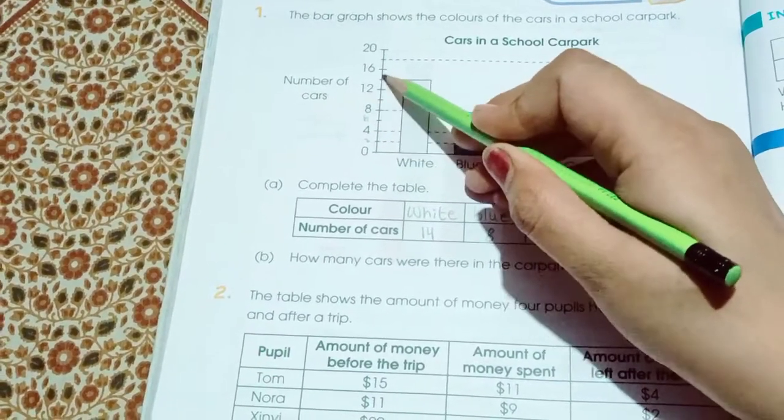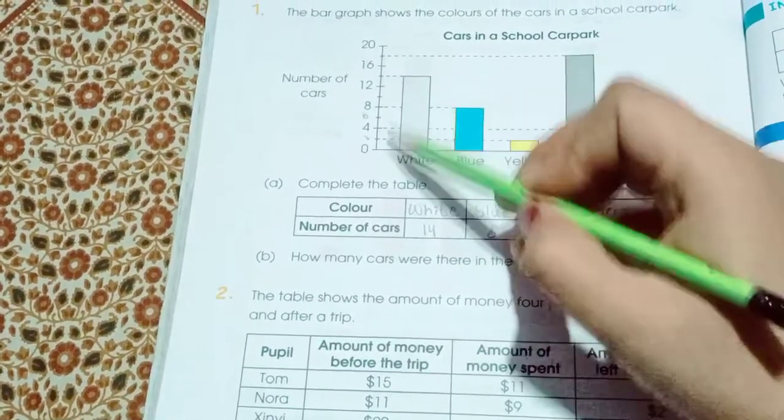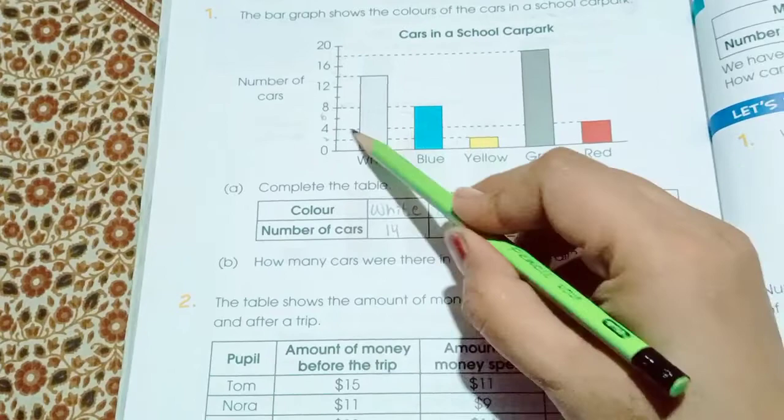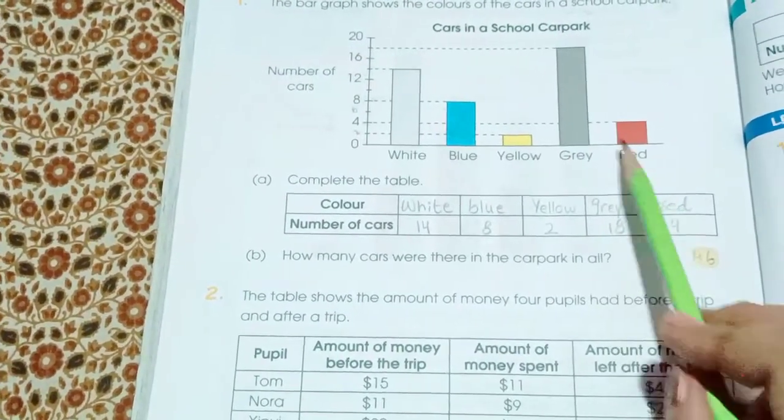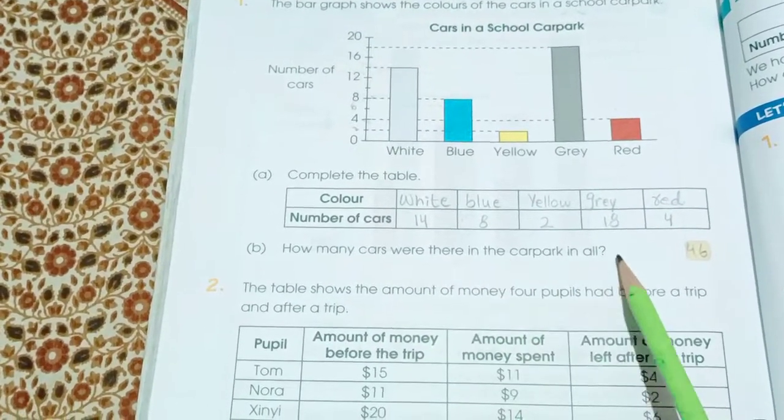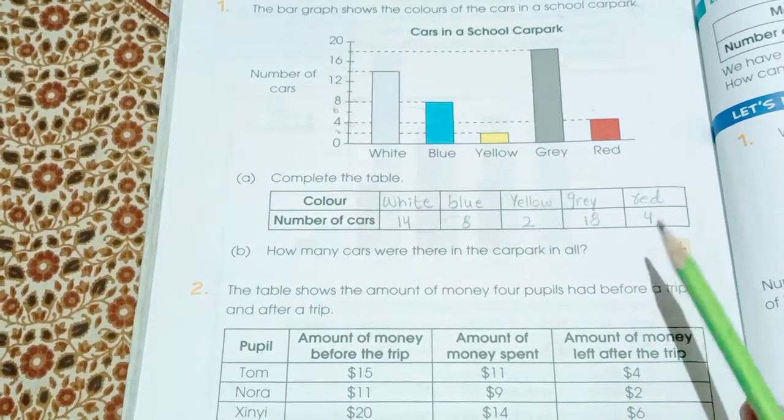0, 2, 4, 6, 8, 10, 12, 14, 16, 18, 20. So here is the number 14 for white cars. Blue cars, 8. Yellow, 2. Grey, 18. Red, 4. How many cars were there in the car park in all? We have to add all the numbers and we get the answer 46.